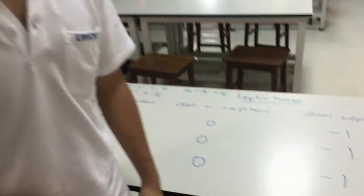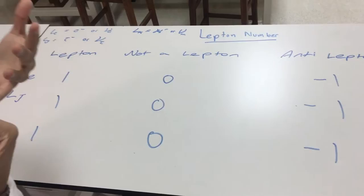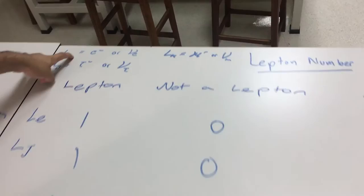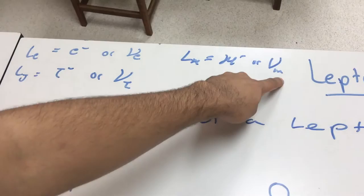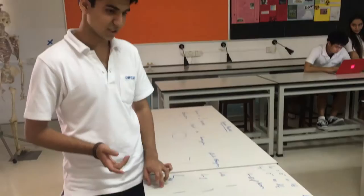So first let's look at the conservation of the lepton number. Previously, we know that there are six different types of leptons, and we can pair them up. For the electron lepton number, we look at the electron or the electron neutrino. For the tau lepton number, we look at the tau or the tau neutrino. And for the muon lepton number, we look at the muon or the muon neutrino.